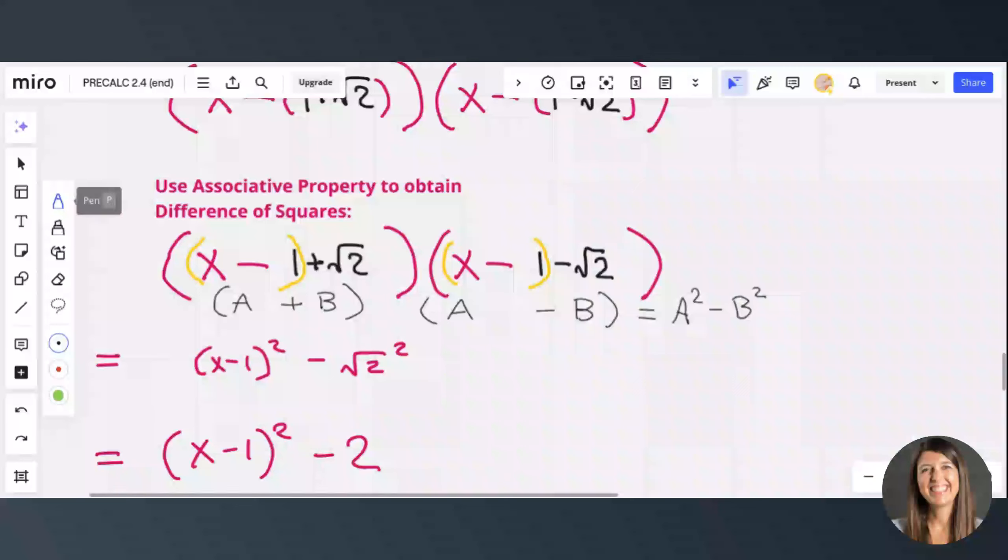So we're going to now pick up where we left off and apply the difference of squares formula. This is going to be a squared minus b squared. So it's x minus 1, which is in the yellow parentheses, squared, minus the square root of 2 squared.